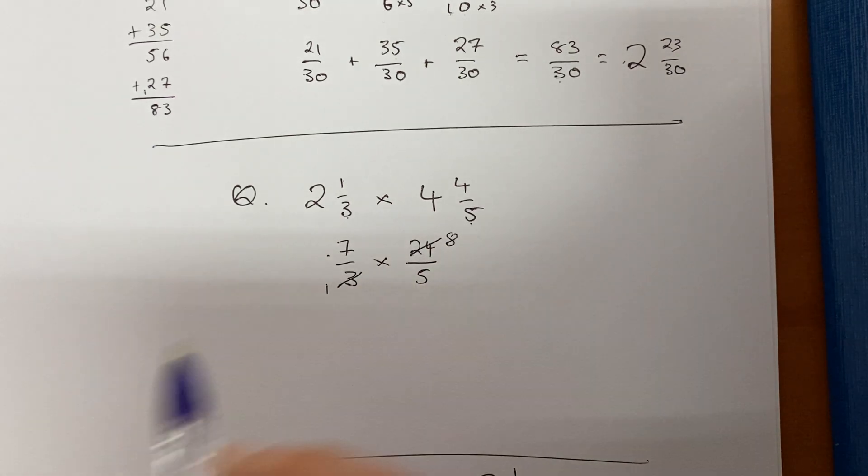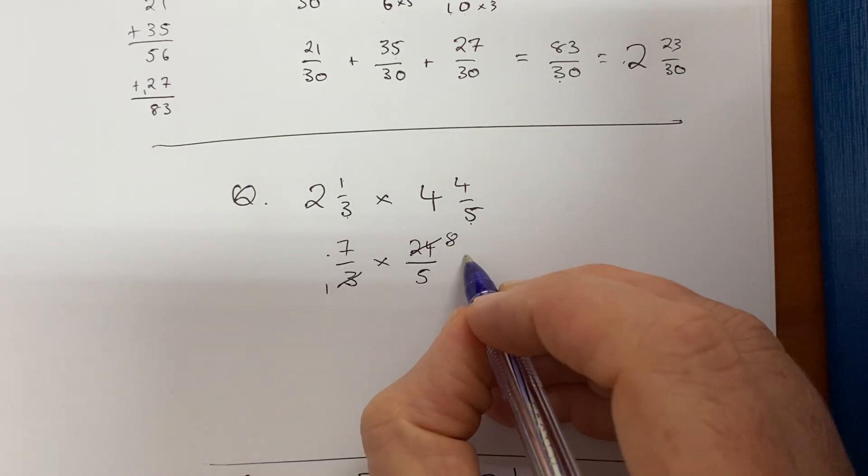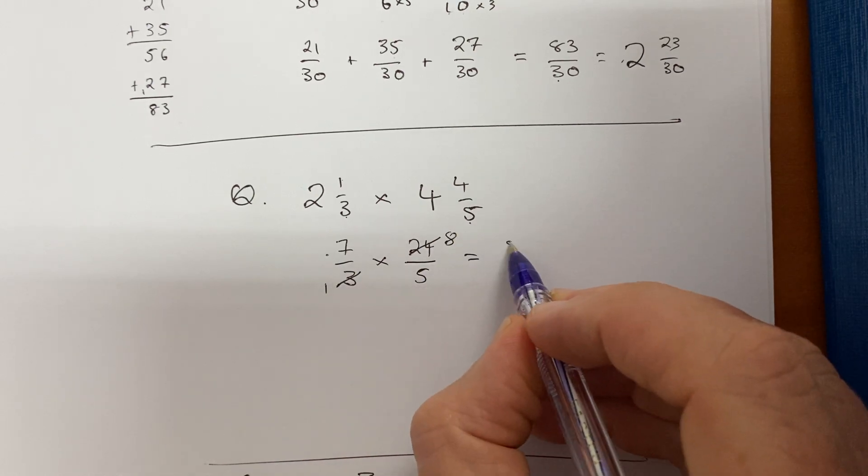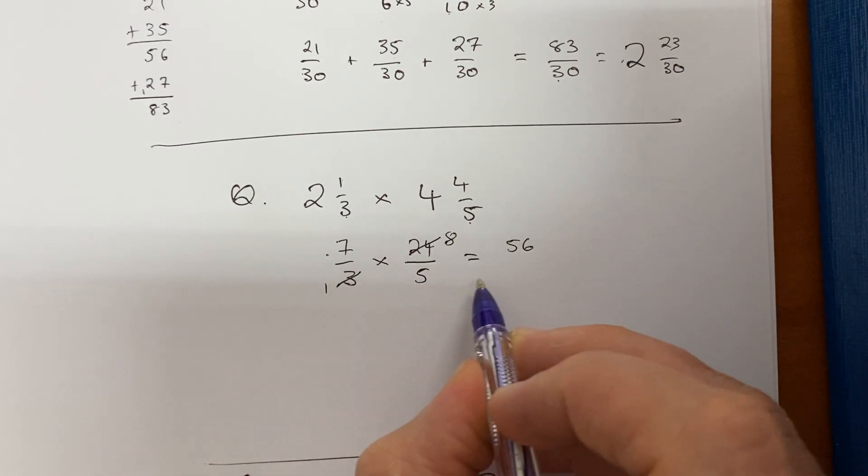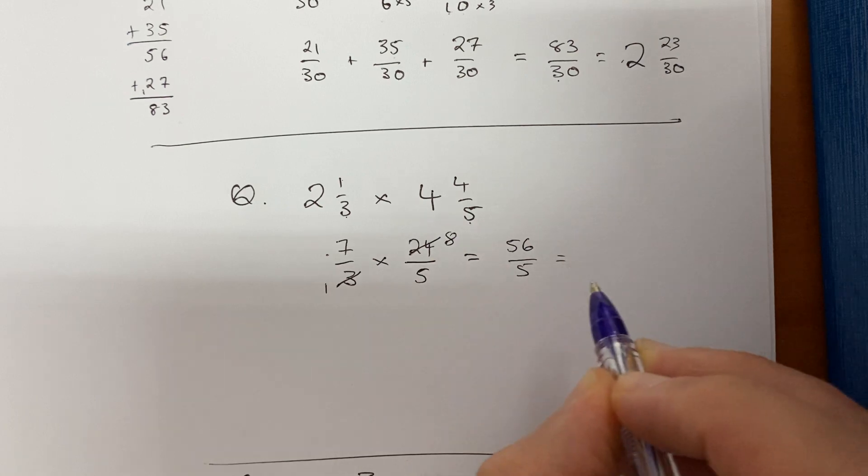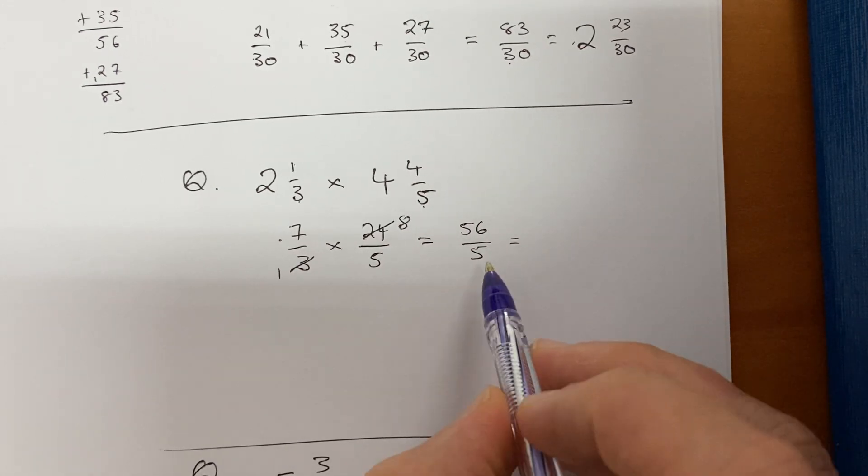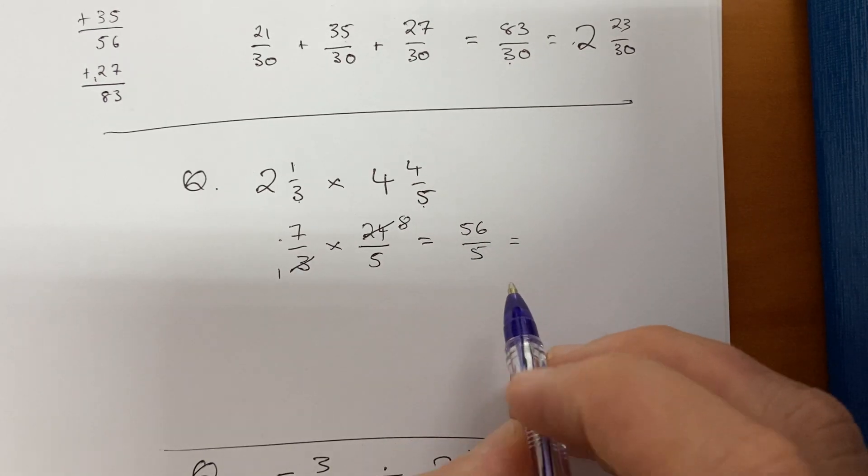Okay, so three into 24 goes eight times. Now that makes my multiplication easier: seven times eight gives 56, and one times five gives five.